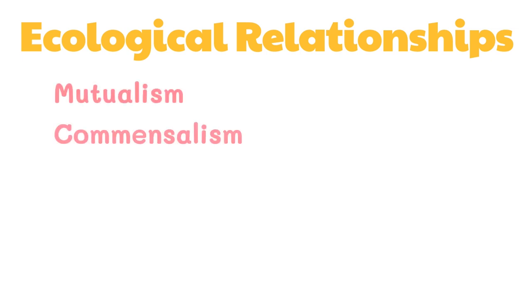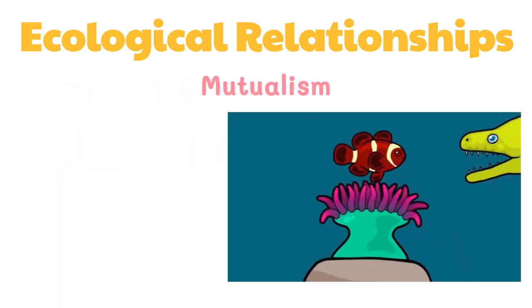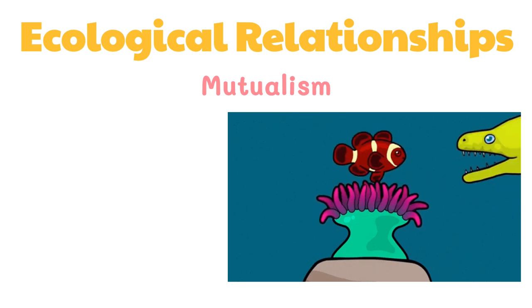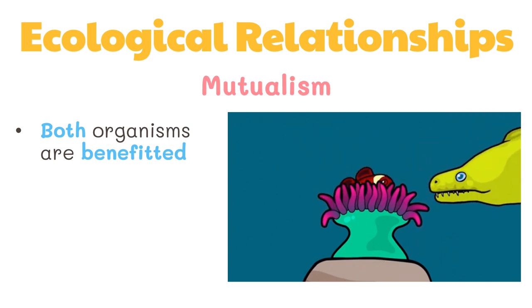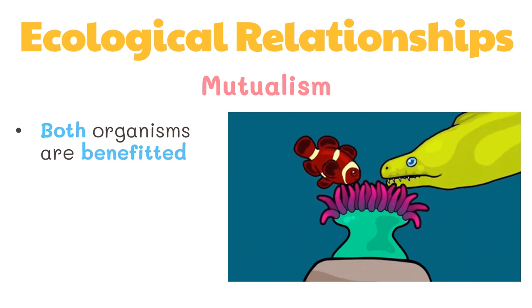There are five types of relationships that exist in an ecosystem: mutualism, commensalism, parasitism, predation, and competition. Mutualism is an ecological relationship where both organisms are benefited. It plays an important role in the growth, reproduction, and survival of the organisms and in maintaining the balance of the ecosystem.